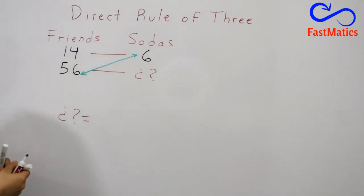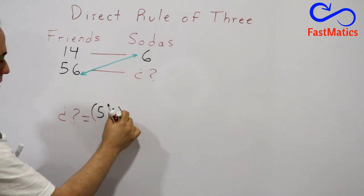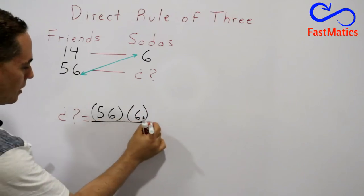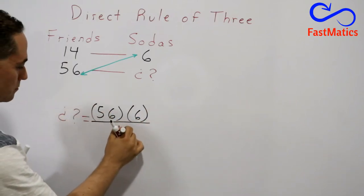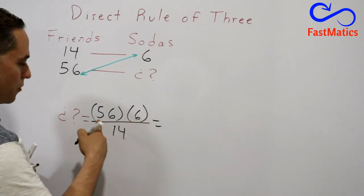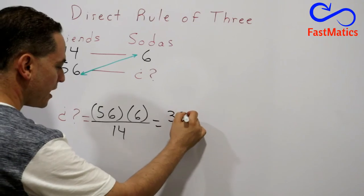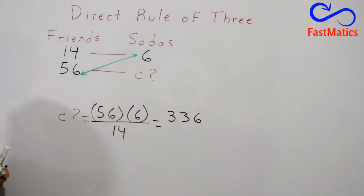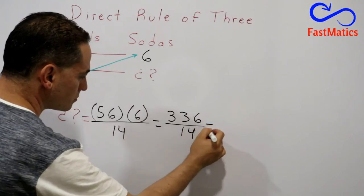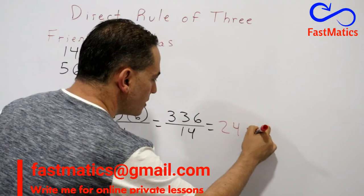Then we write 56 times 6 divided by 14. So 56 times 6 equals 336, divided by 14 gives us 24 sodas.